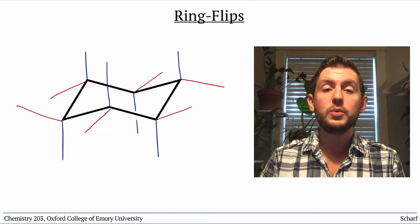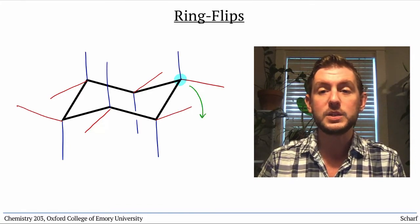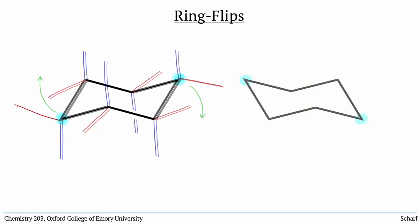To draw a ring-flip, we take the two tips of the chair we've drawn and flip them. This one goes down, and this one goes up, to give us a chair that looks like this.